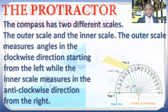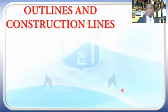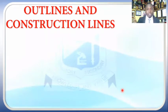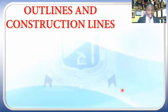Before we start our construction in earnest, let's talk about types of lines. There are many types of lines used in geometric construction, but we'll be talking about just two in this class. The first one is your outline, and the second is the construction line. Of course, we have several others like broken lines, dotted lines, and center lines, but let's focus on these two as they pertain to this topic.